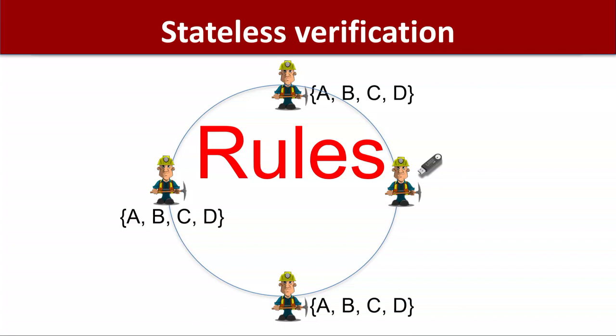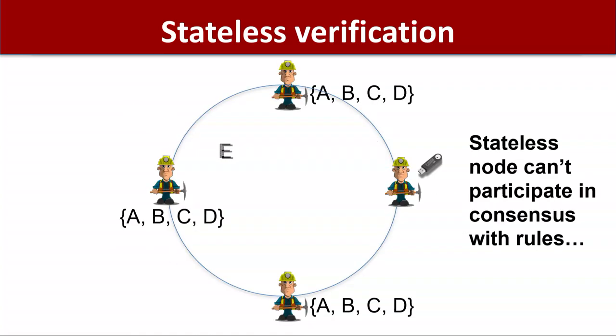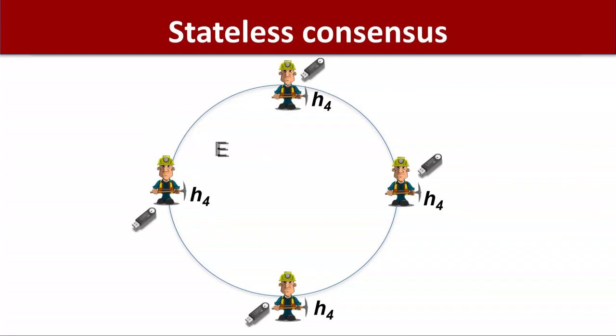What happens when we add rules to this database? Someone who's just listening to the system can verify everyone agrees about the same sequence of updates, the same transaction log, but a miner participating with no storage has no way of verifying that new transactions coming in are actually correct. For example, one rule is that a new transaction spending the same coin that a previous transaction spent should be rejected — but this miner with no storage has no way of knowing this.